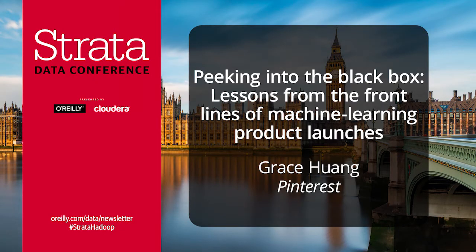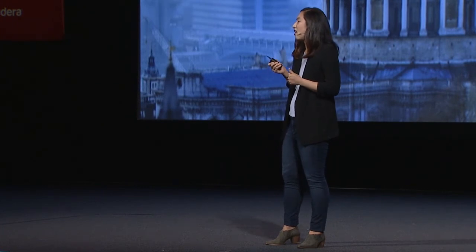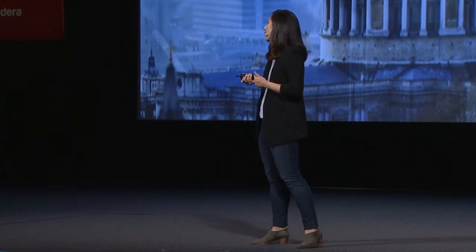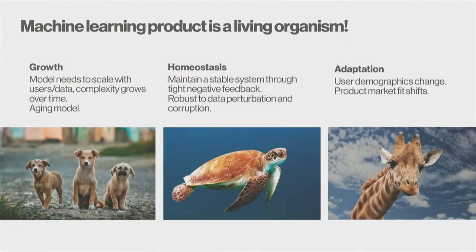As I was preparing this talk, I was thinking back on my previous training as a computational biologist, and it occurred to me that all these anti-patterns are symptoms of a failure to think of machine learning products as living organisms. There are a few interesting qualities of a living organism: they grow, they maintain homeostasis — a relatively stable equilibrium with the system — and they adapt to the environment. In very much the same way, machine learning products need to have these qualities.